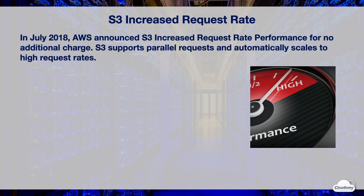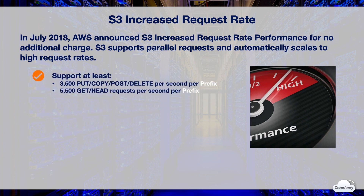In July 2018, AWS announced S3 increased request rate performance for no additional charge. S3 supports parallel requests and automatically scales to support high request rates. The increased performance can achieve at least 3,500 write requests per second per prefix for put, post, copy, and delete requests, and at least 5,500 read requests per second per prefix for get and head requests.